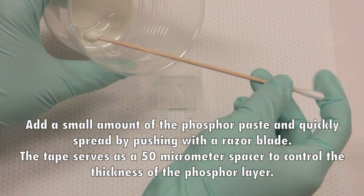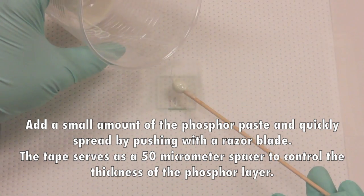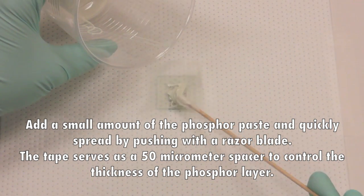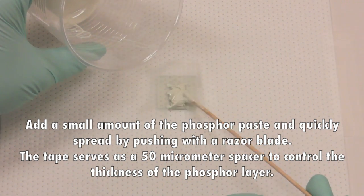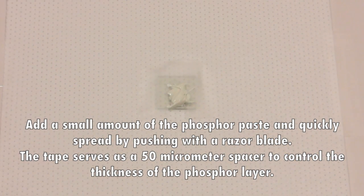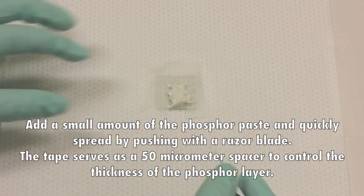Add a small amount of phosphor paste and quickly spread it by pushing with a razor blade. The tape serves as a 50 micrometer spacer to control the thickness of the phosphor layer.